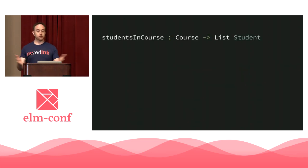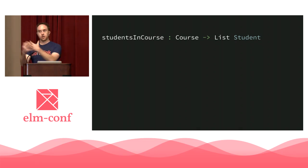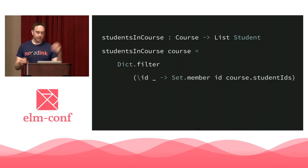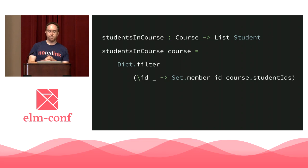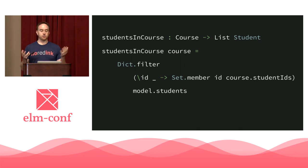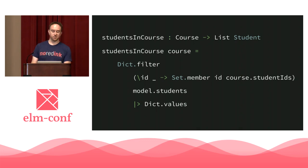Now we can write a studentsInCourse function that takes a course and returns a list of students. It does Dict.filter on all students, checking whether each student's ID is a Set.member of the course's student ID set. This filters the dictionary down to just students in that particular course. Then pipe it to Dict.values to get a list. We now have a single source of truth maintained, with no nested record updates needed.